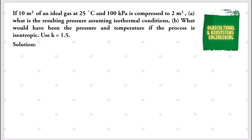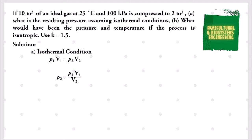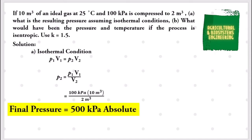We begin solving the final pressure in isothermal condition. We will be using the formula: initial pressure multiplied by initial volume equals the product of the final pressure and the final volume. Deriving for P2, final pressure equals the product of initial pressure and initial volume divided by the final volume. Substituting: 100 kPa times 10 cubic meters, divided by 2 cubic meters, gives us a final pressure of 500 kilopascals absolute.